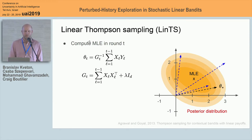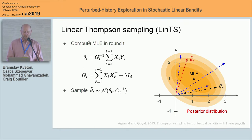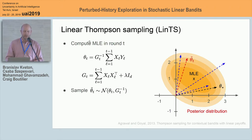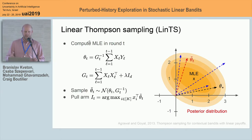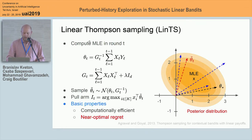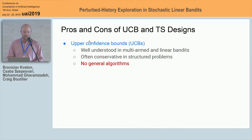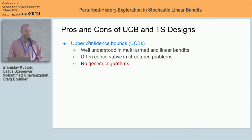We also have algorithms based on Thompson sampling. In Thompson sampling, you compute the maximum likelihood estimate in round T and then perturb it. Instead of acting optimistically with respect to the maximum likelihood estimate, you sample a perturbed estimate from a normal distribution centered at the maximum likelihood estimate, whose covariance is the inverse of the sample covariance matrix. Then you pull the arm with the highest dot product between the sampled parameter vector and the feature vector. Linear Thompson sampling algorithms are also computationally efficient and achieve near-optimal regret.